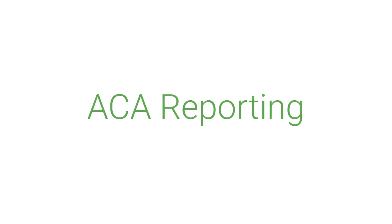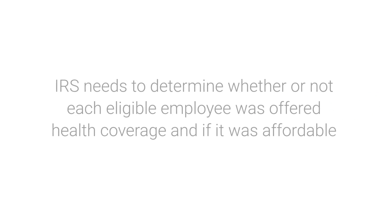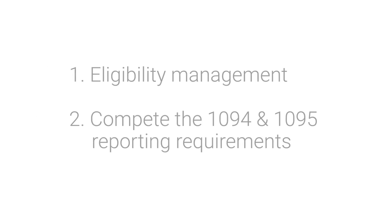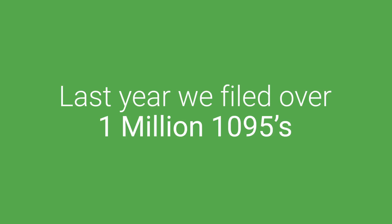ACA reporting. Employee Navigator has taken the pain out of ACA reporting with our simple but powerful ACA product. When it comes to ACA reporting, the IRS needs to determine whether or not each eligible employee was offered health coverage and if it was affordable. Because of this, any ACA reporting tool needs to do two things: eligibility management and complete the 1094 and 1095 reporting requirements. We've got you covered with both. Last year, we filed over 1 million 1095s.